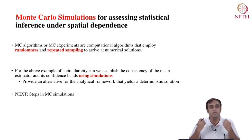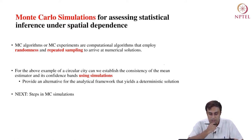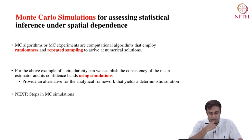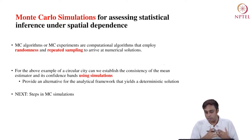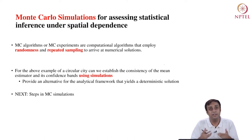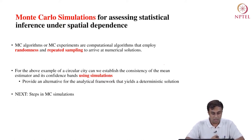You are going to be sampling again and again from a parent distribution. The example we covered in the last lecture — that of a circular city — we can establish whether or not the mean estimator and the 95% confidence bounds are indeed consistent estimators in the presence of spatial dependence using simulations. That is the sort of power here.